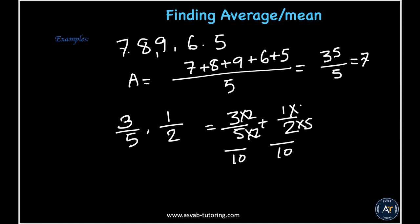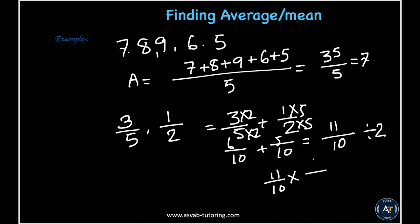Multiply to get equivalent fractions: 3 times 2 is 6, and 1 times 5 is 5. Adding gives 11 over 10. Now divide by 2: 11/10 times 1/2. Using keep-change-flip, the final answer is 11 over 20.